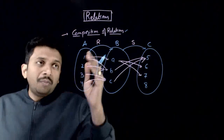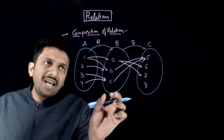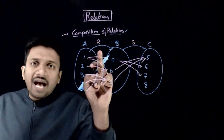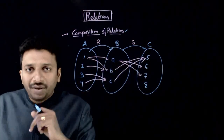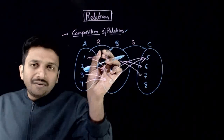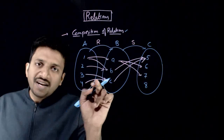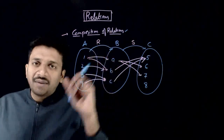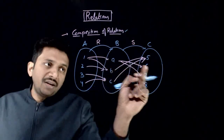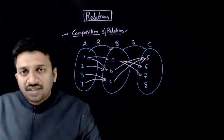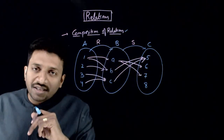To understand the composition of relation, let us take an example. Let us take three sets A, B, C, where R is a relation defined from A to B and S is a relation defined from B to C. R relates 1 to A, 1 to B, 2 to B, 3 to C, and 4 to C — these are the five connections that R makes. And S makes four connections: A to 6, A to 7, B to 5, and C to 5.